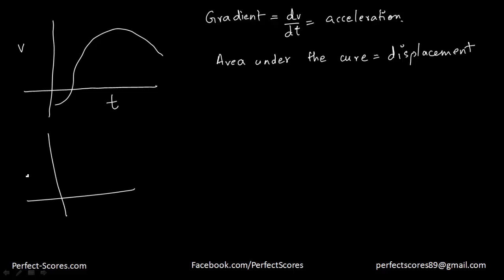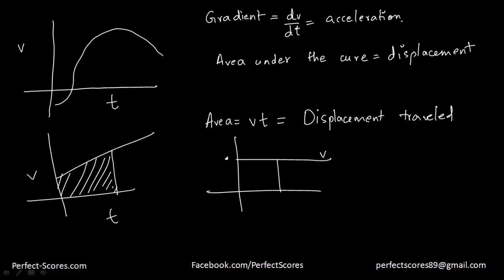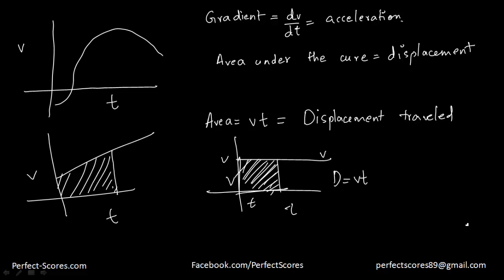Let's take a very simple curve — this is velocity and this is time. If I find out the area under this curve, the area will actually be equal to velocity into time, which is going to be the displacement or the distance travelled. So the area under the velocity and time graph will actually give you the distance or the displacement travelled.